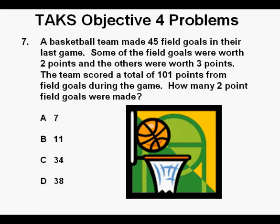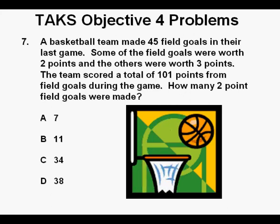Problem 7: The basketball team made 45 field goals in their last game. Some of the field goals were worth 2 points and the others were worth 3 points. The team scored a total of 101 points from field goals during the game. How many 2 point field goals were made?